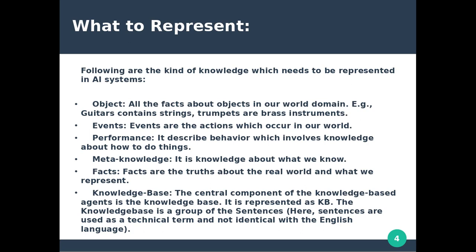The second type is events. Events are the actions which occur in our world. Actions are events, and they are also constraints that happen in the real world.